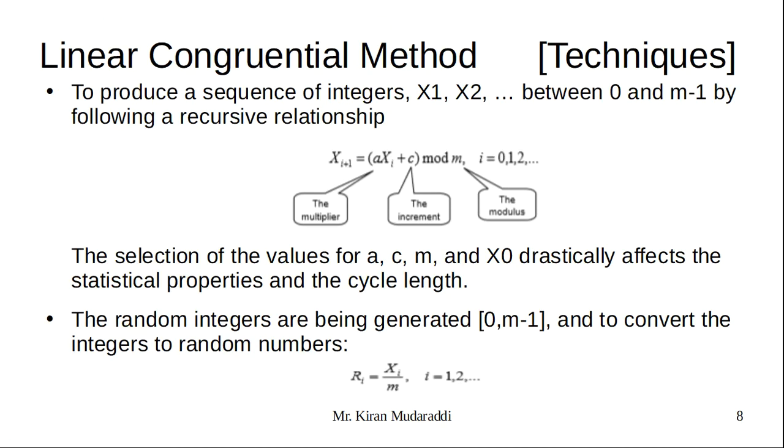It basically has two steps. First, we need to generate a sequence of integers. After that, with the help of the sequence of integers, we are going to generate random numbers. To generate the sequence of integers, we need this formula: X(i+1) = (a*Xi + c) mod m, where a is the multiplier, c is the increment, and m is the modulus. Finally, R(i) = Xi/m. Using these two formulas, we generate random numbers. This method is called linear congruential method.